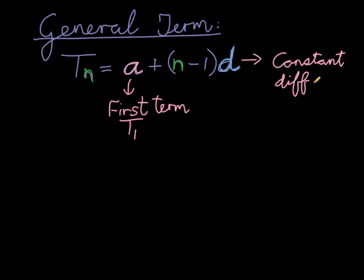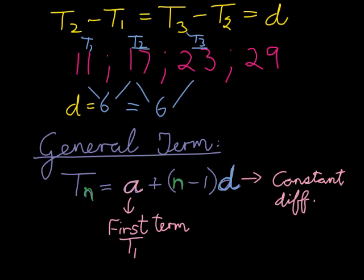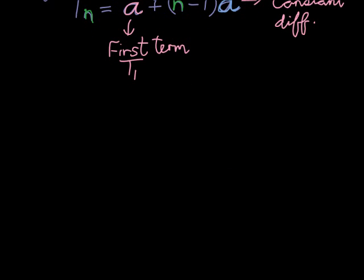Now once we have those values, so for example, in the example I gave earlier, the first term, that must be the value of a. This is the value of d. And n, we don't want the value n yet. n we want to be general. So if I wanted to write the general formula for that sequence, it would be tn equals 11 plus n minus 1 times 6, 6 represented as the constant difference.